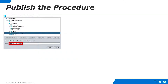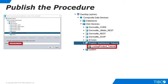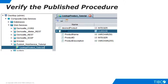Optionally, you can change the name of the published procedure. Click OK and the procedure is added to the endpoint as a new operation. Now you can open the published procedure and examine its column names and data types.